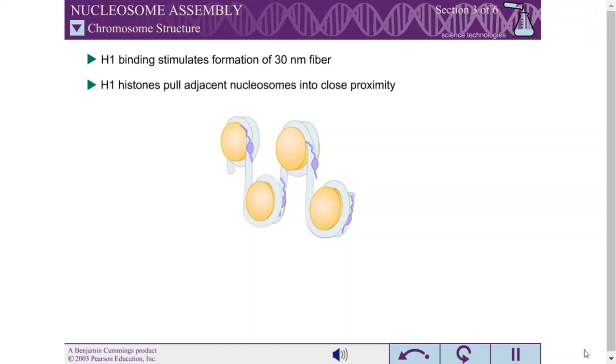The structure of the 30 nanometer fiber has not been fully determined and may differ between species. There are two hypothesized forms of the 30 nanometer fiber.